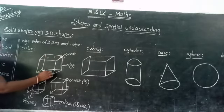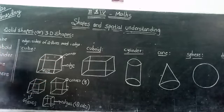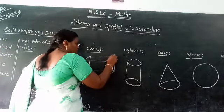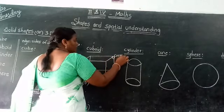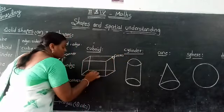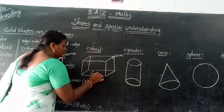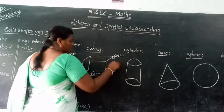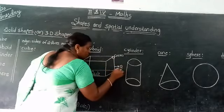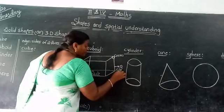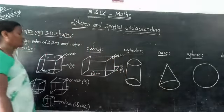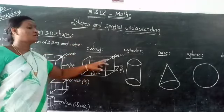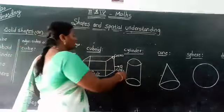Cuboid has 8 corners. This is a corner and this is a face. Cuboid has 6 faces and 12 edges. So cuboid has 8 corners, 6 faces, and 12 edges.